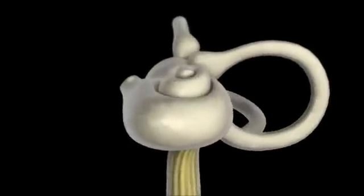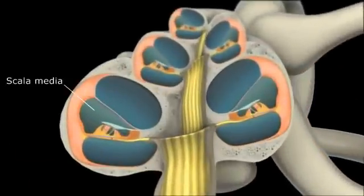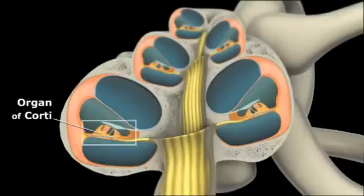In cross-section is the scala media. This houses the organ of Corti, which is referred to as the receptor organ of hearing. The scala media is filled with endolymph.